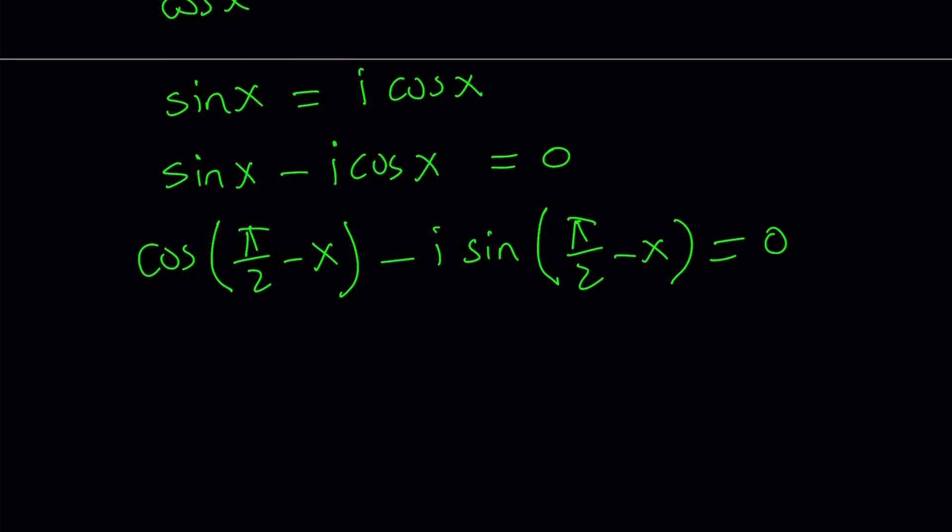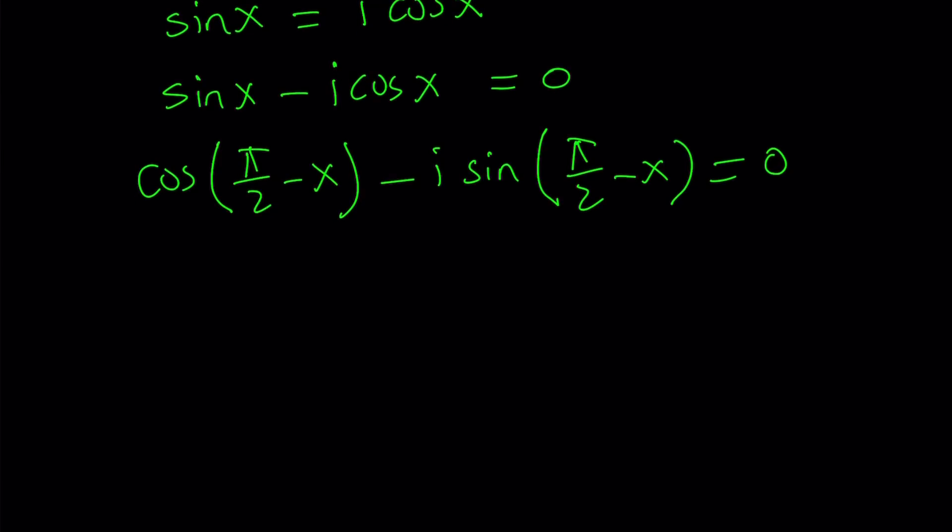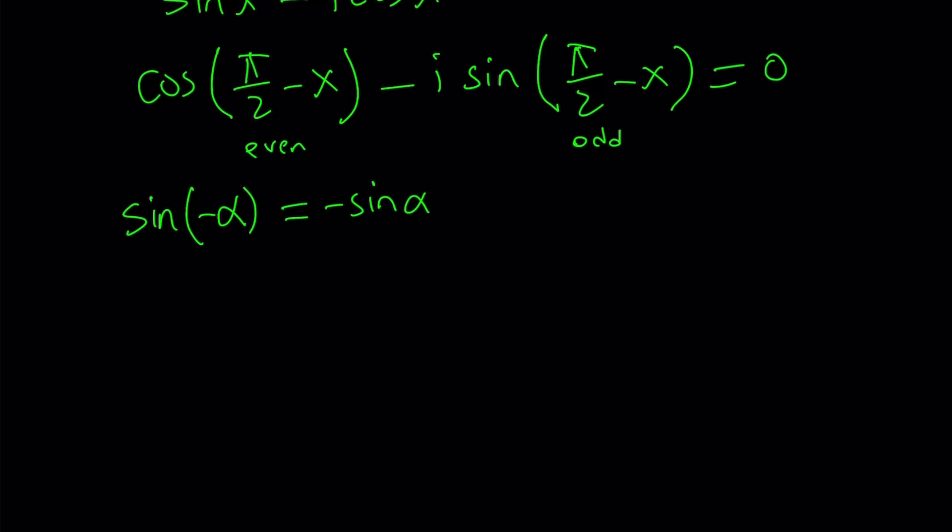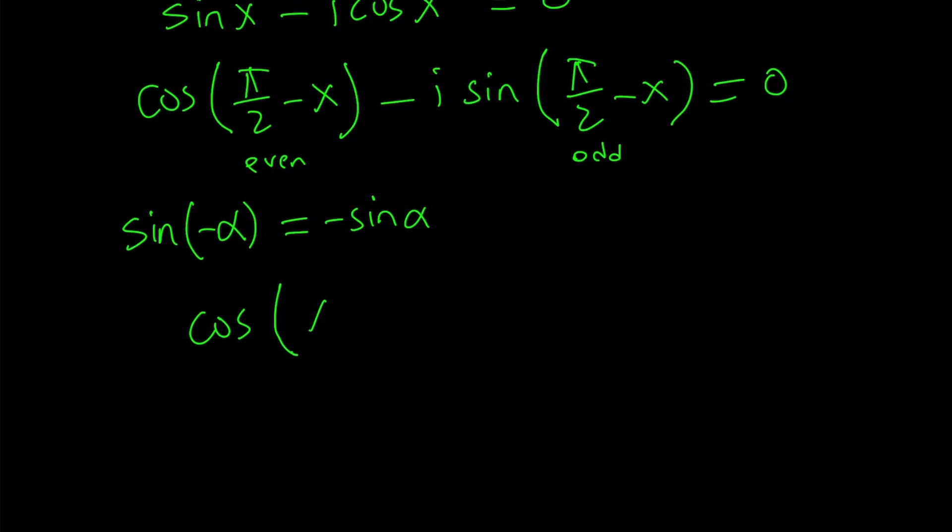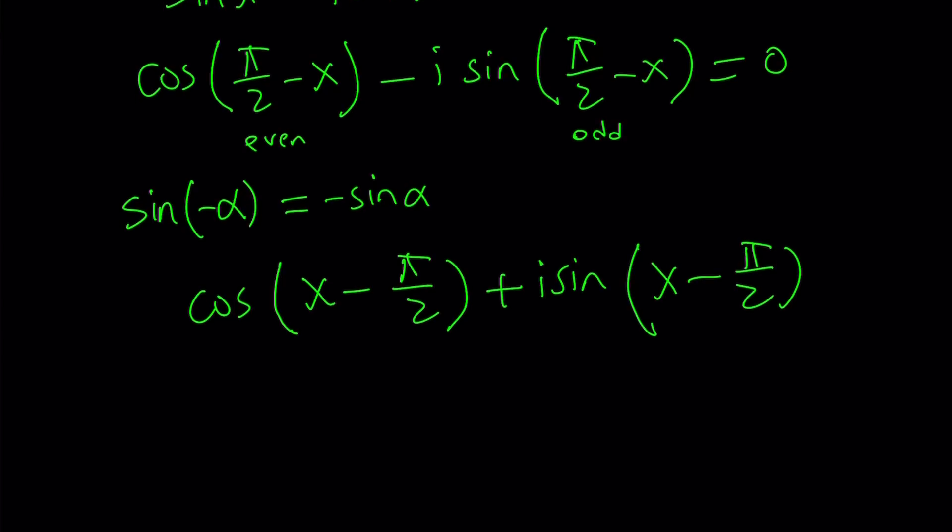Now, I would like to get rid of the minus sine. But that's easy because sine is an odd function. So sine of negative alpha is negative sine of alpha. So I kind of have like a negative sine alpha here. By negating my angle, I'm going to be able to get rid of the negative sine. But cosine is even. So even, odd. But everything will be taken care of. If we replace pi over 2 minus x with x minus pi over 2, so we can safely say that this is equivalent to cosine of x minus pi over 2 plus i sine x minus pi over 2. So I got rid of the minus sine because I used the opposite of pi over 2 minus x.